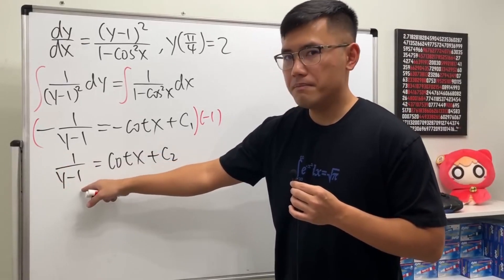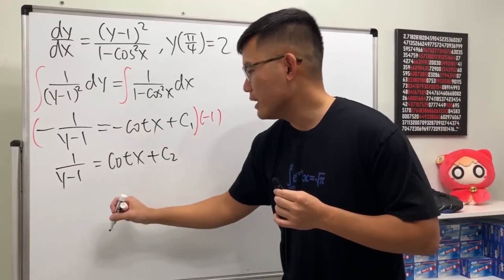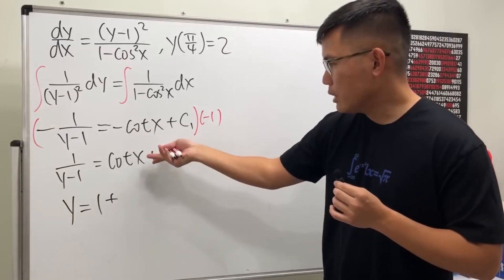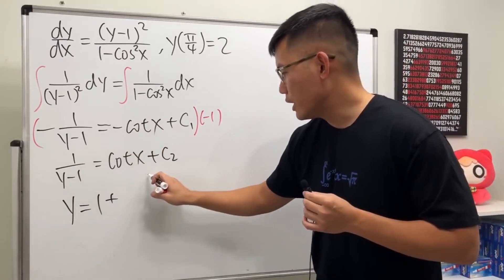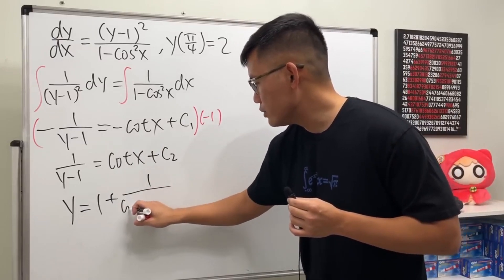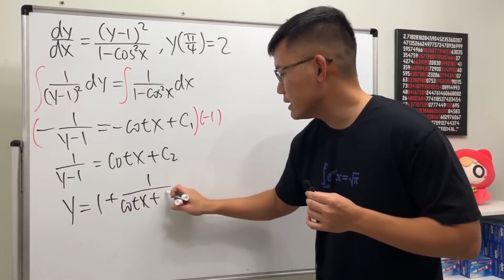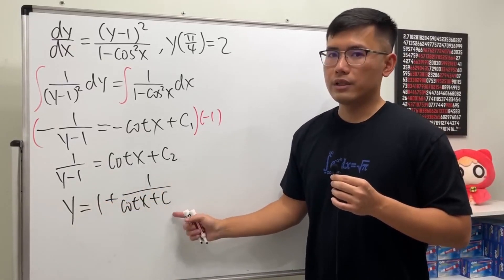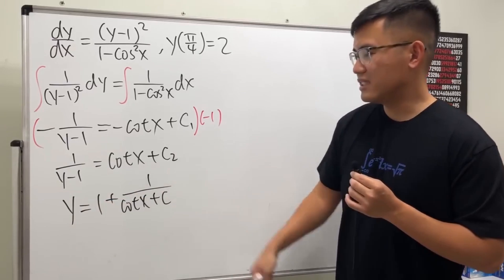Let's put the -1 to the other side, so we get y = 1 plus the reciprocal of the entire right-hand side, which gives us y = 1 + 1/(cot x + C). This is it because we got y by itself, so I don't need to write down the index anymore. That's the general solution.